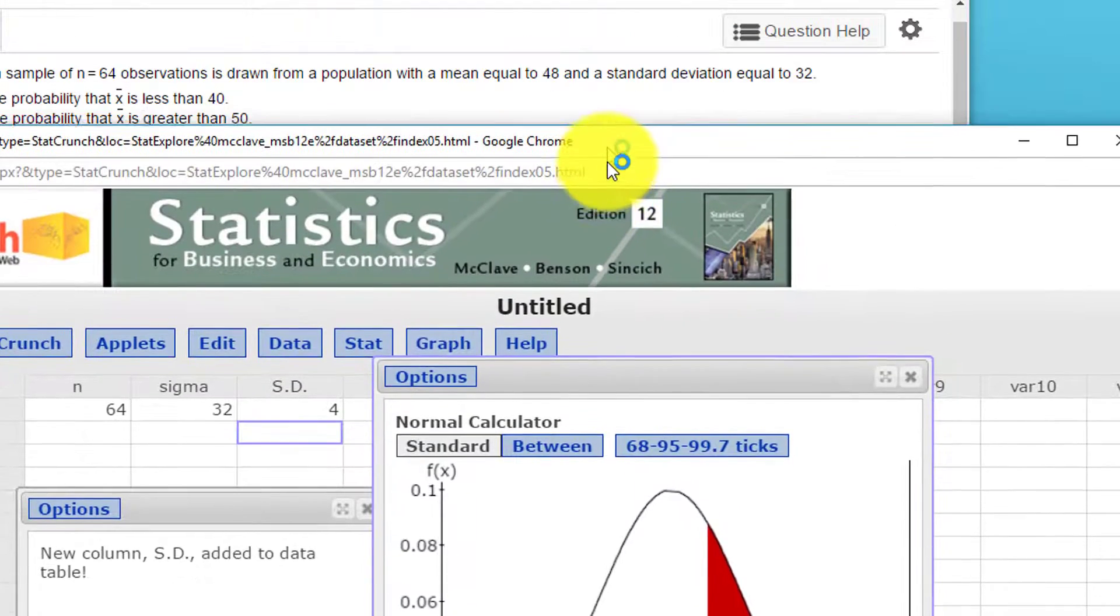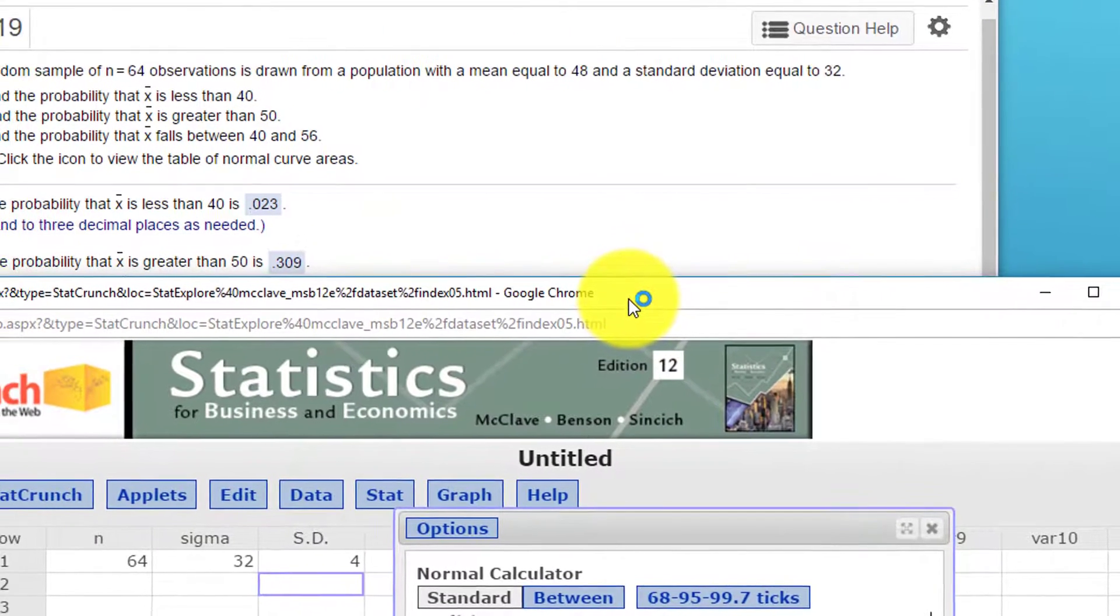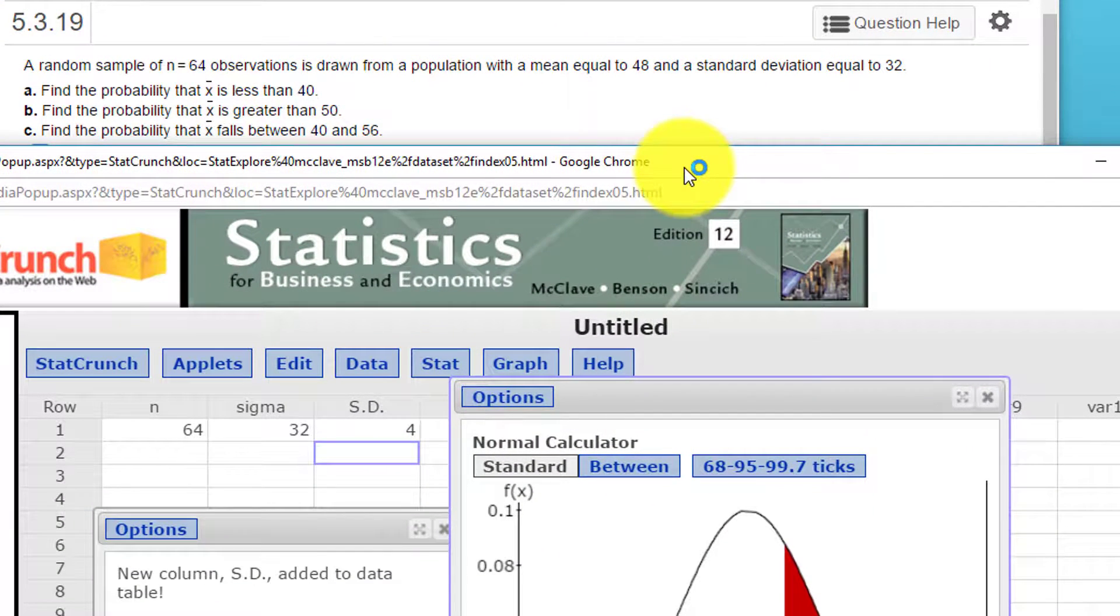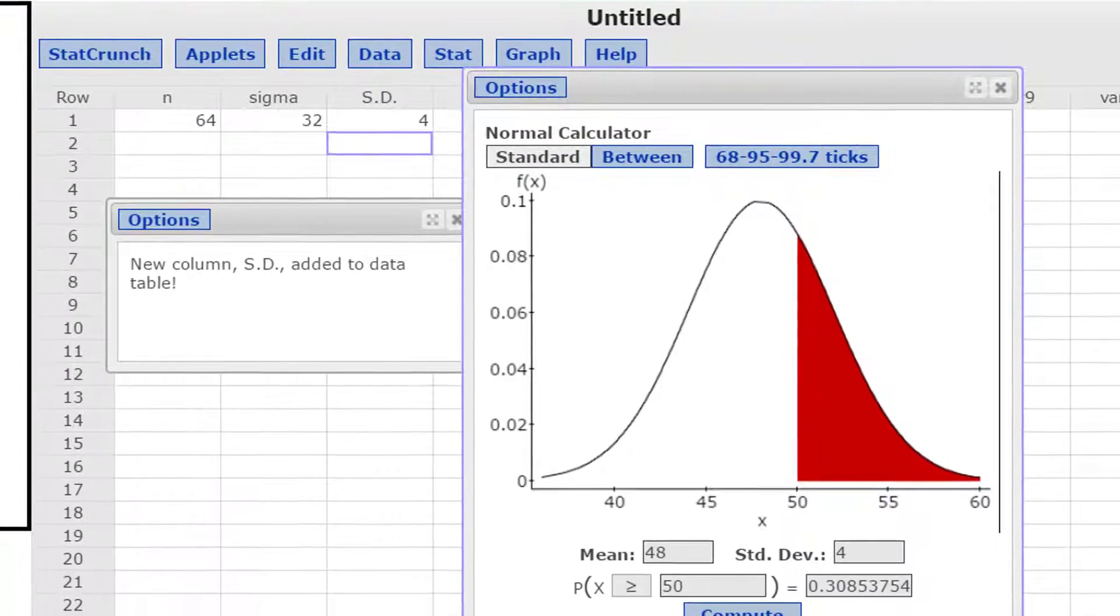So again, I'll drag this down. And yes, that's the answer. The final part is find the probability that x bar falls between 40 and 56.